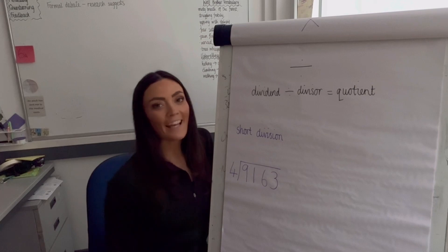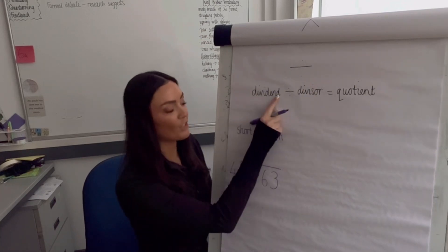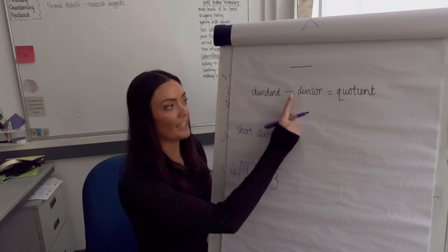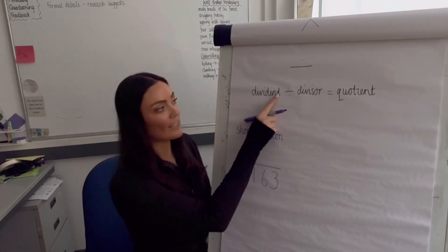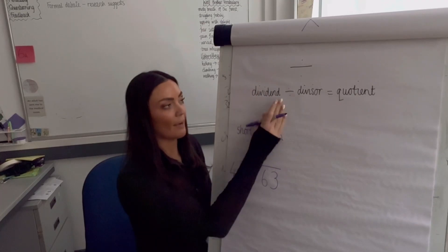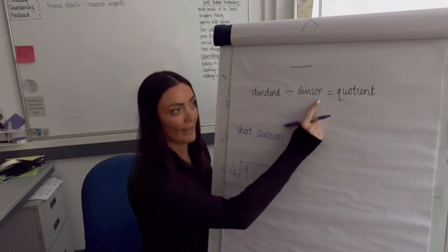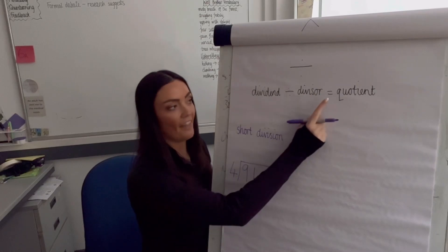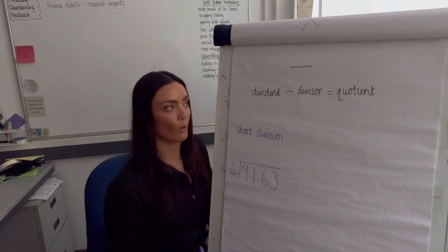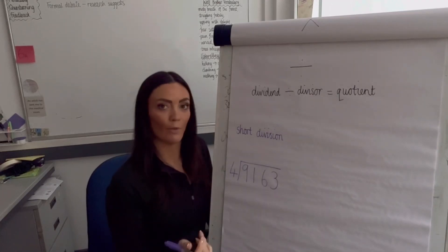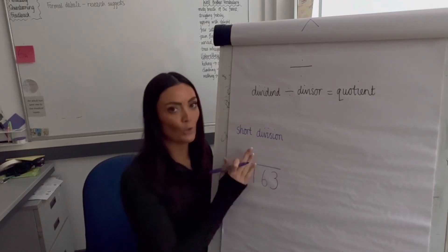Now we're looking at dividing. We have our dividend divided by our divisor equals our quotient. The dividend is the amount you start with; you share it equally into groups; the quotient is how many are in each equal group; and we check if there's a remainder at the end.